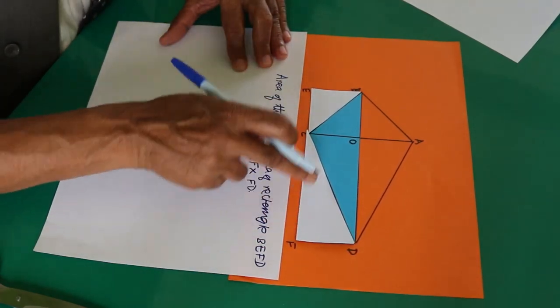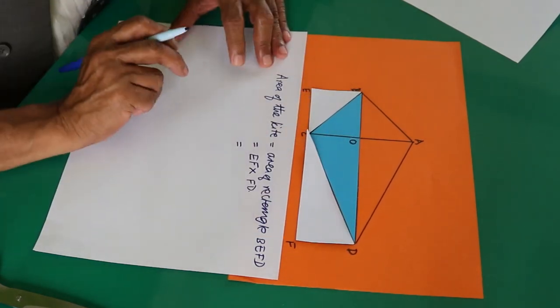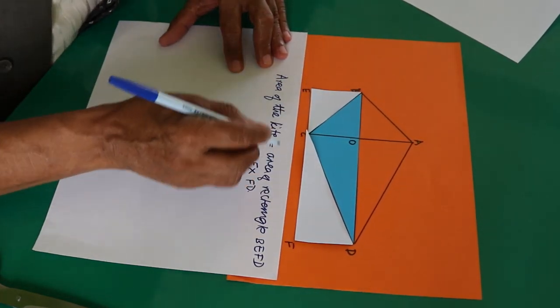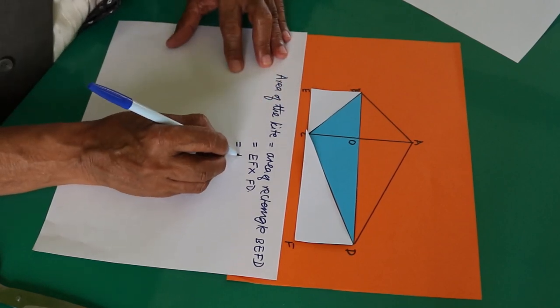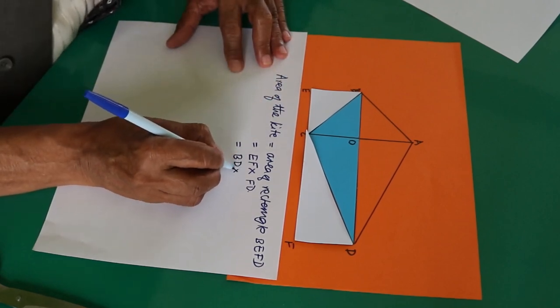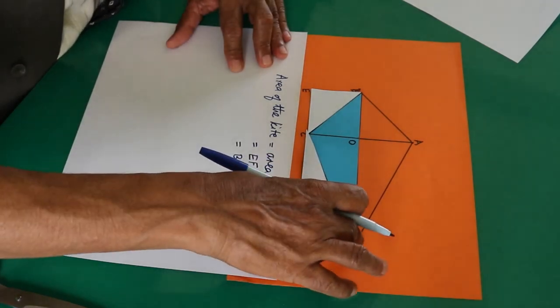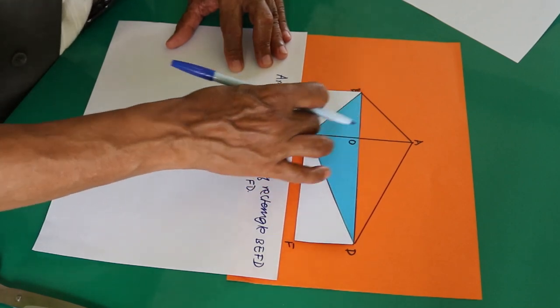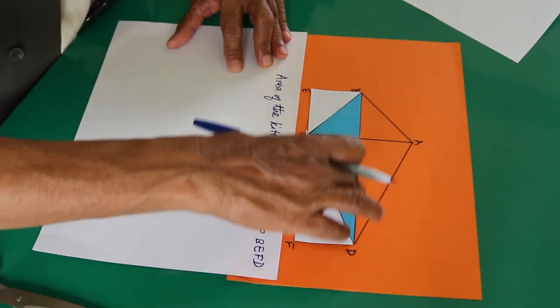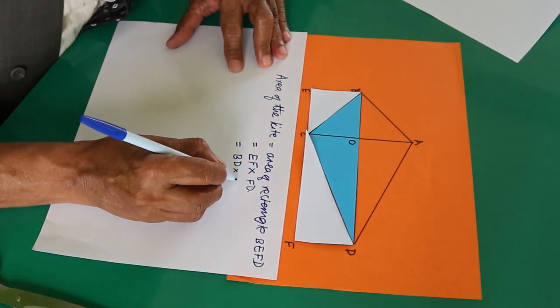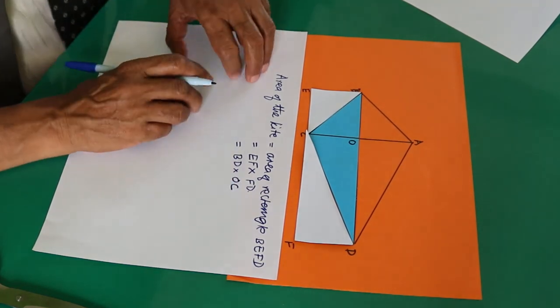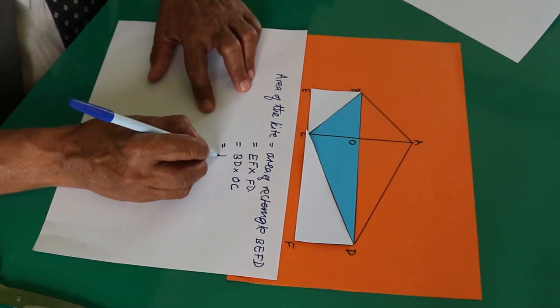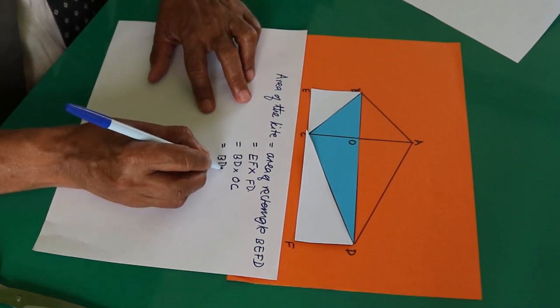So EF is equal to BD by the properties of rectangle—opposite sides are equal and parallel. So EF can be replaced by BD, and this FD is also opposite side of this rectangle, the one here. That is why this BD is equal to OC. BD is there as BD itself into OC.